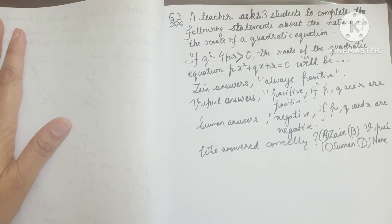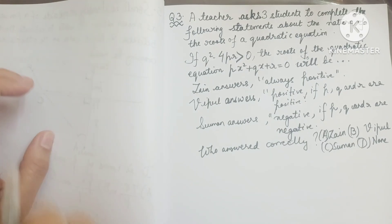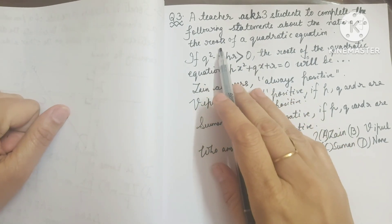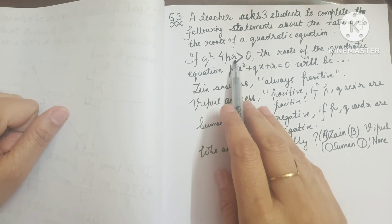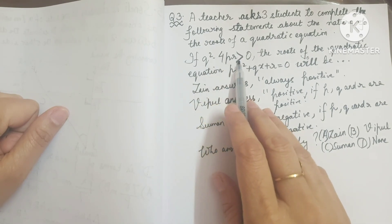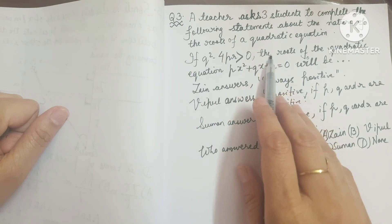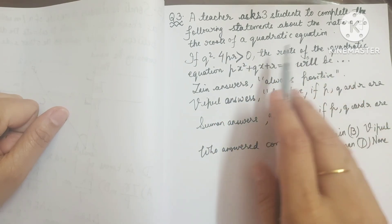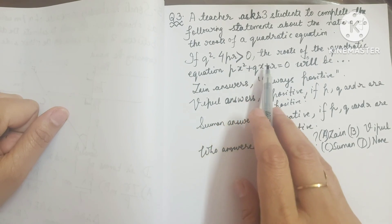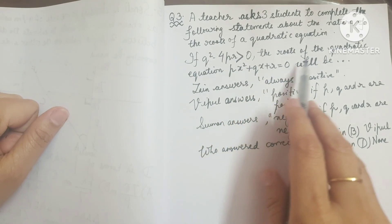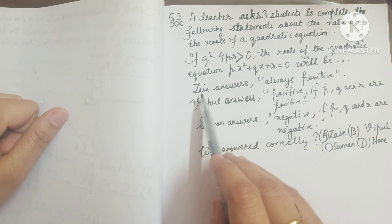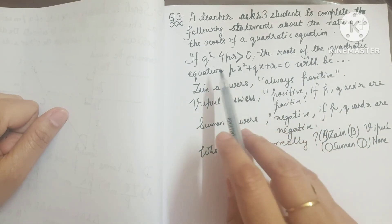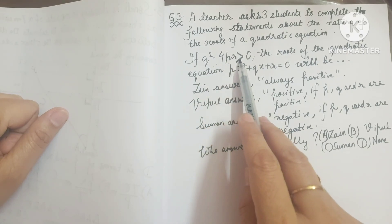Now let's start with question number 3. A teacher asks 3 students to complete the following statement about the nature of the roots of a quadratic equation. The discriminant given is: if q squared minus 4pr is greater than 0, then the roots of the quadratic equation px squared plus qx plus r equals 0 will be — and the students must complete this.